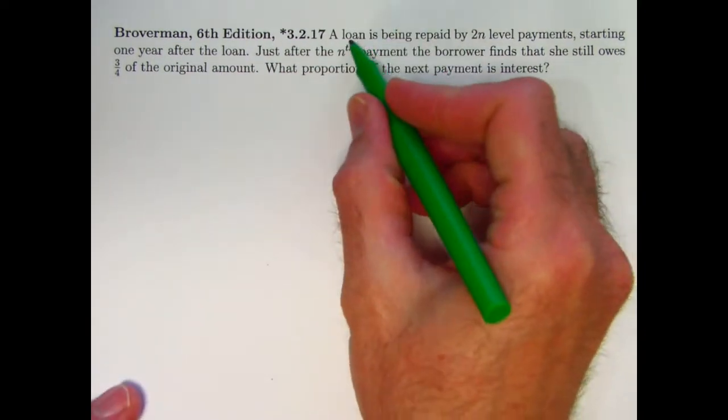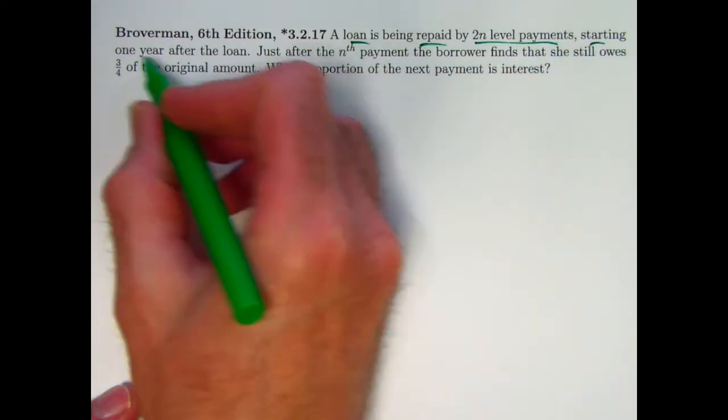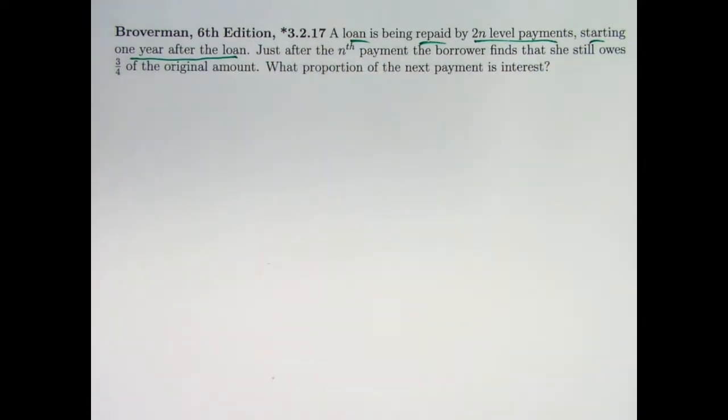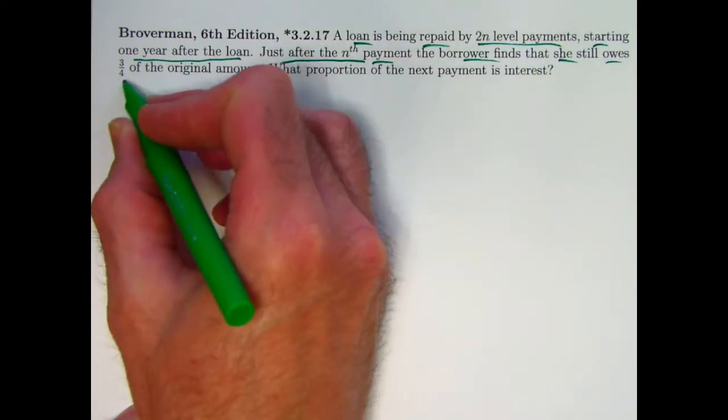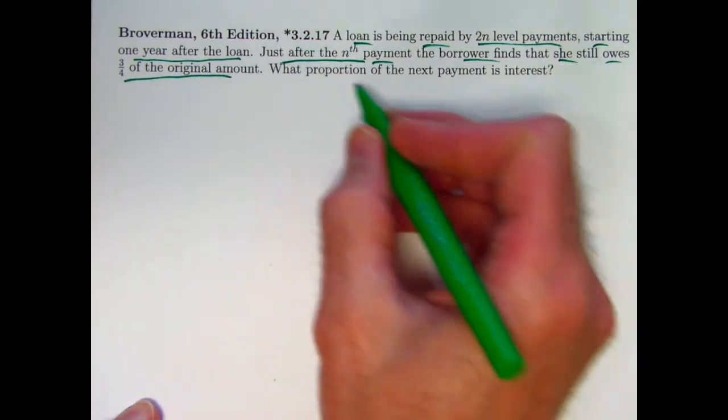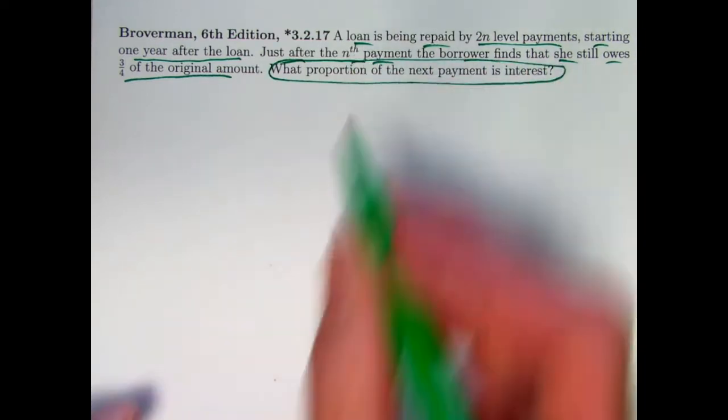A loan is being repaid with 2N level payments starting one year after the loan is made. So this is going to be an annual annuity immediate. Just after the nth payment, the borrower finds that she still owes three-fourths of the original amount. The goal is to find what proportion of the next payment goes toward interest.